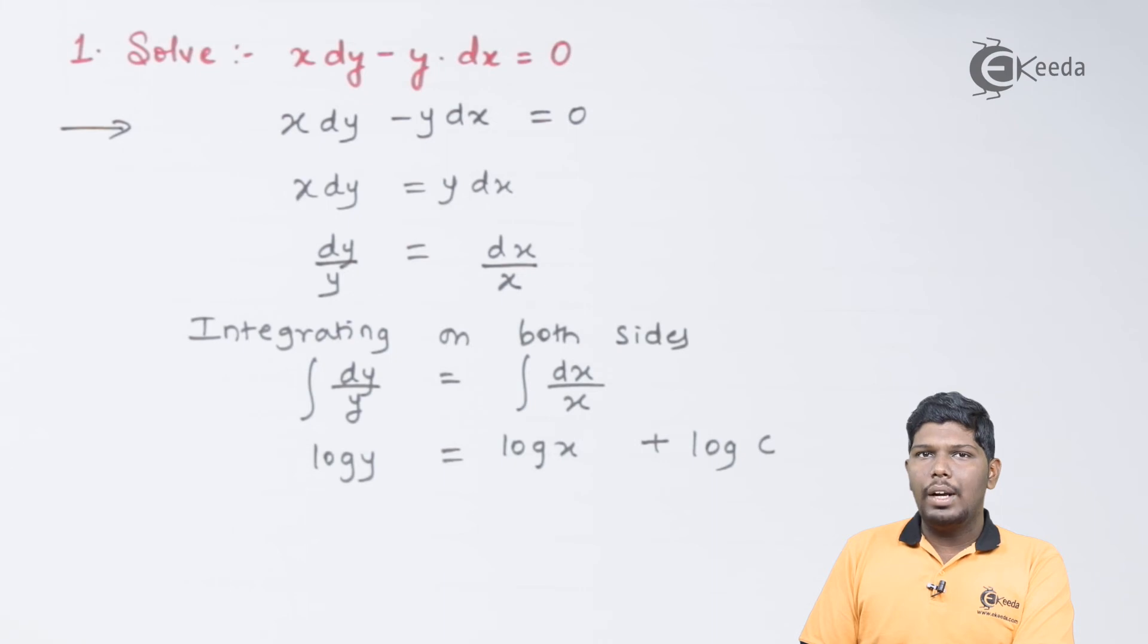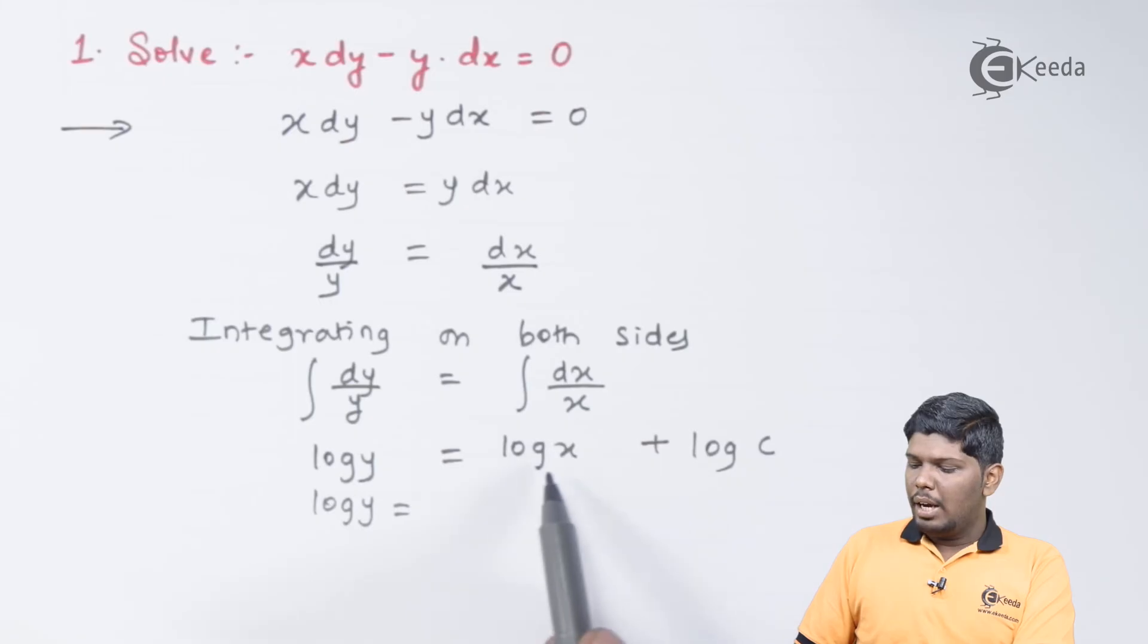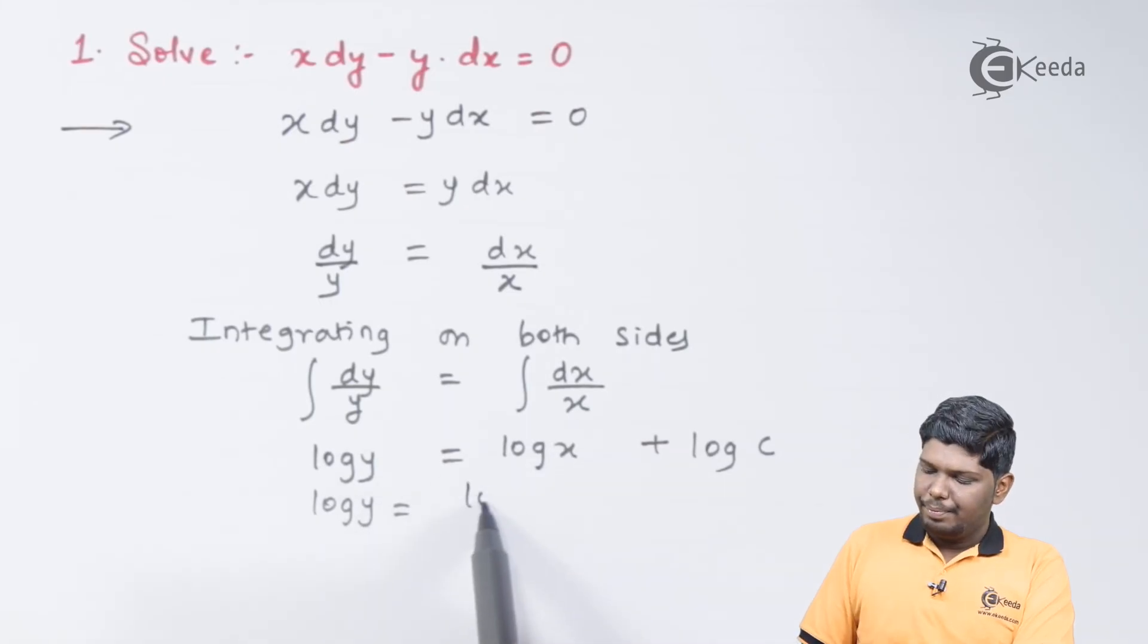Now, let us see how to simplify it further. On the right-hand side, we have log a plus log b. That will give you log ab. So that is equal to log x into c.